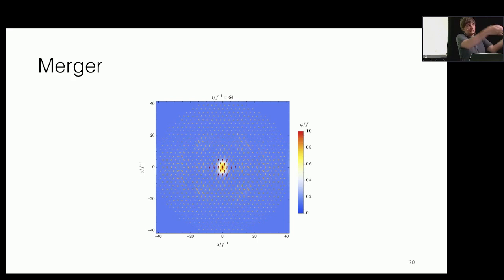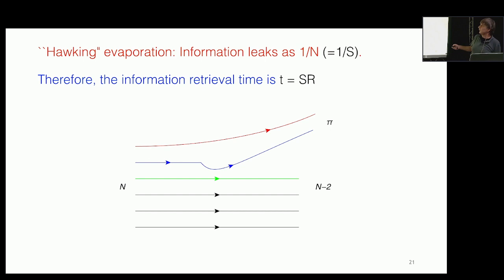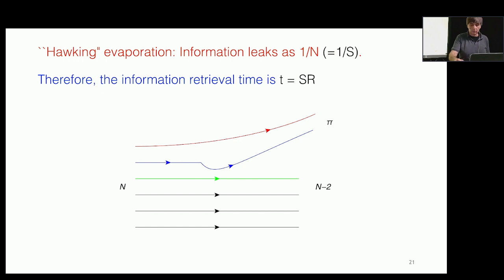Literally you can translate everything that a black hole does to this saturon state. Here is a full quantum computation of the evaporation of the saturon — it evaporates continuously even in the semi-classical limit. Pi denotes an outgoing particle, and as you can see, the information is carried by 1/N effects of this process. These 1/N or 1/S effects mean the information retrieval time — the start of information retrieval, not complete retrieval — immediately shows in QFT language why the information retrieval time has to scale proportional to the entropy, because of 1/S corrections.